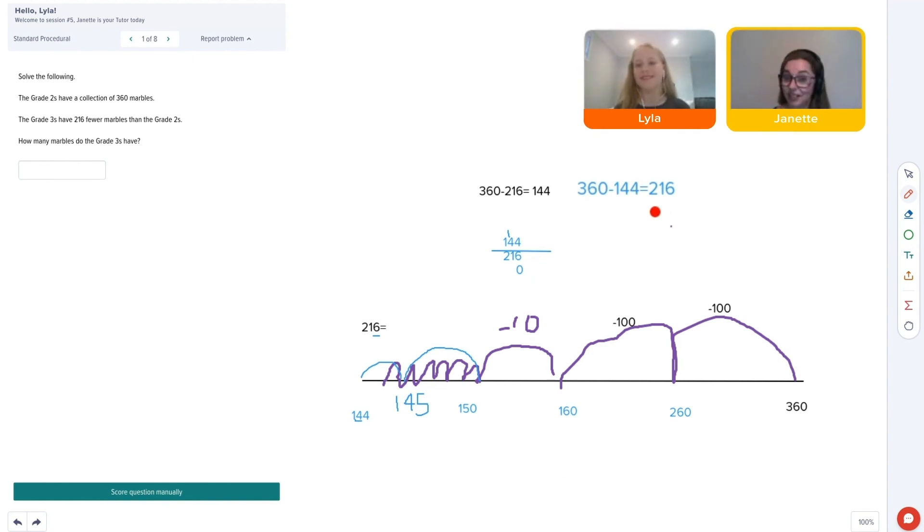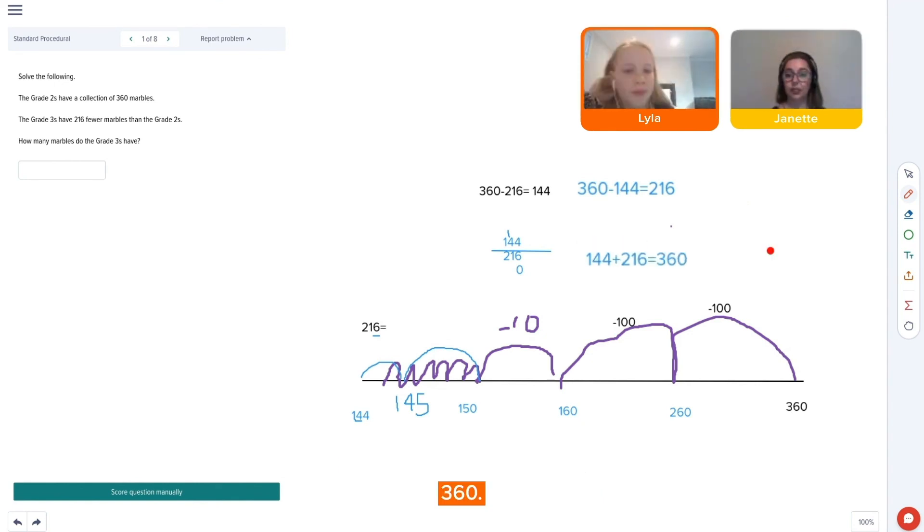It's like a fact. It's a fact family, just like you were planning before. 144 plus 216. We know that the answer has to be 360. 360.